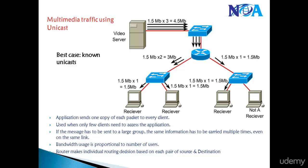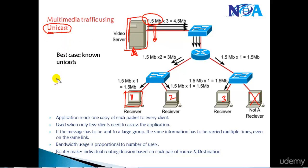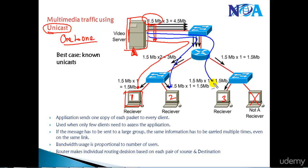Next, let's understand why there is a need for multicast — why not use unicast or broadcast. Suppose there is a video server supposed to send a video stream to multiple receivers: receiver one, receiver two, and receiver three on different LANs. If we use unicast, it performs one-to-one communication, sending a separate video stream for each user.